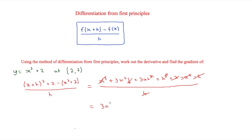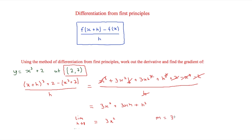Limiting h to 0, the terms 3xh and h² both become 0, so our derivative is 3x². To find the gradient at the point (2, 7) we substitute x = 2: m = 3 × 2² = 3 × 4 = 12. So the gradient at that point is 12.